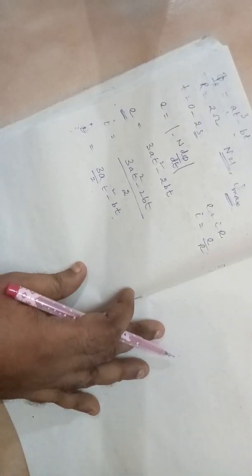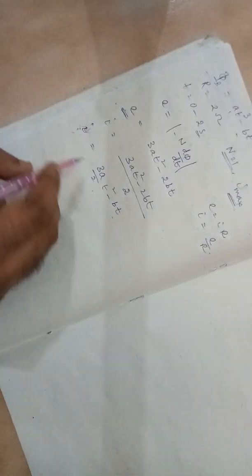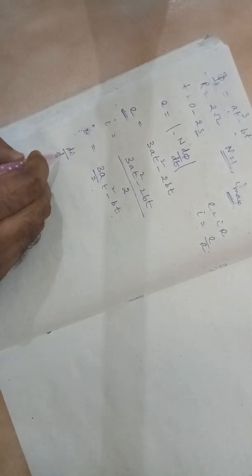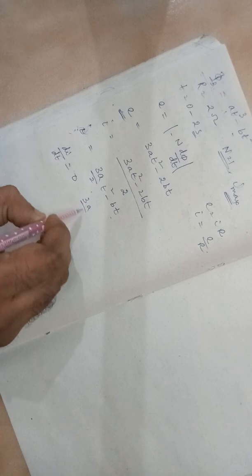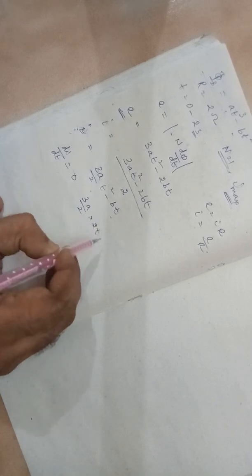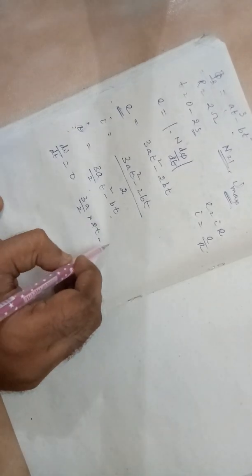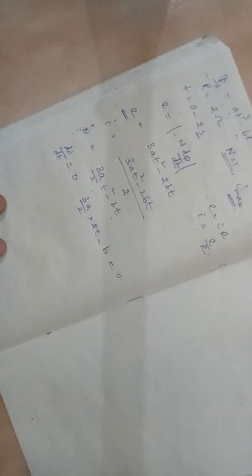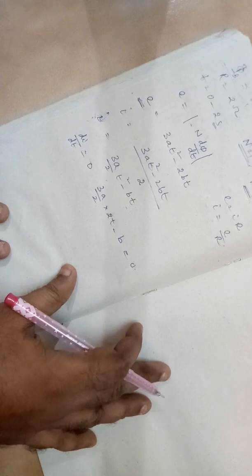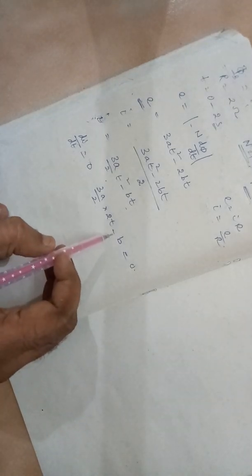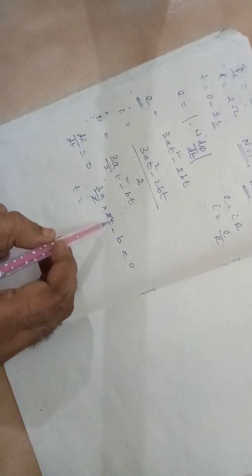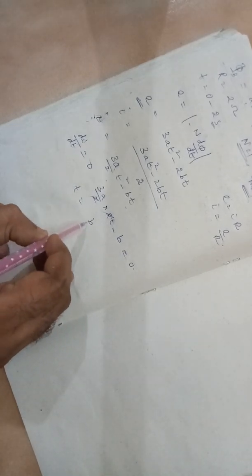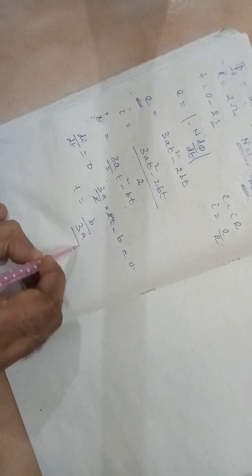If you want to find the maxima, you have to differentiate it with respect to time and equal to 0. So you get 3 A by 2 into 2 t minus B is equal to 0. So T is equal to B by 3 A.